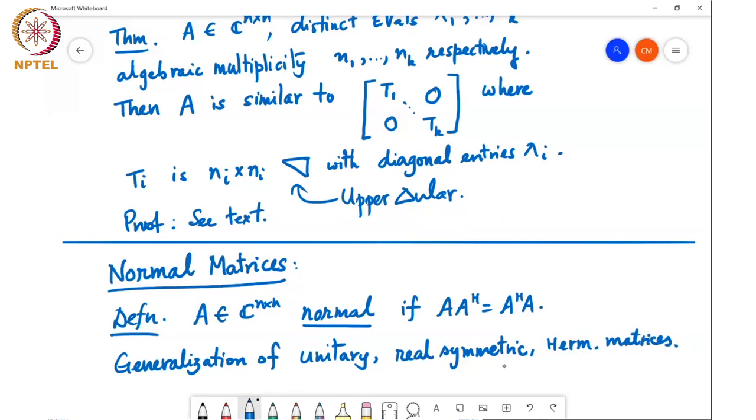So, for example, for a real symmetric matrix, it's a matrix such that A transpose equals A. And if it's real symmetric, then A transpose equals A, then AA Hermitian is the same as AA transpose, but A transpose equals A. So, this is equal to A squared. This is also equal to A squared. So, it holds for a real symmetric matrix.